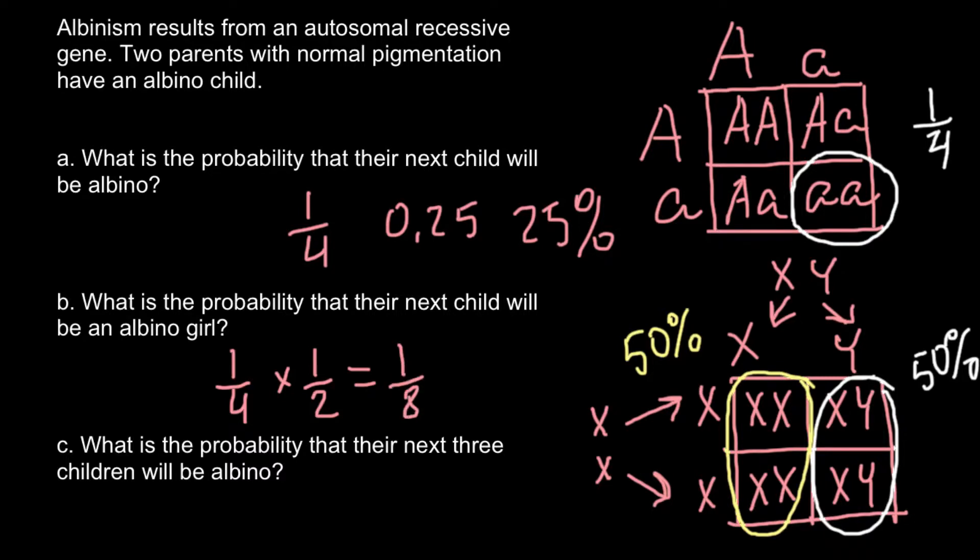So the last question is: What is the probability that the next three children will be albino? This is also very easy.